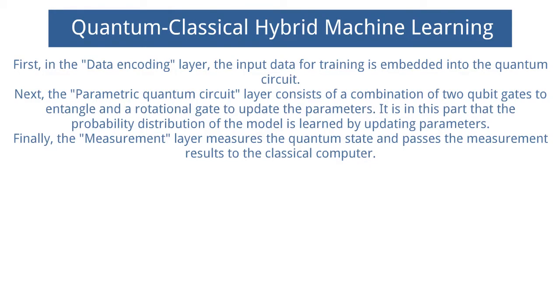Next, the parametric quantum circuit layer consists of a combination of two-qubit gates to entangle and a rotational gate to update the parameters. It is in this part that the probability distribution of the model is learned by updating parameters.